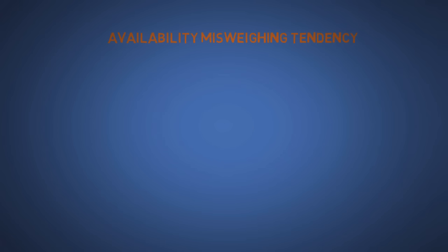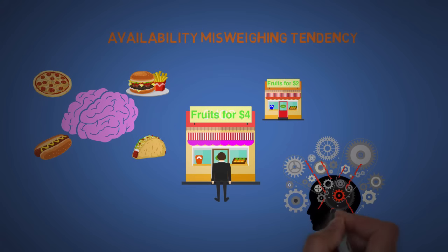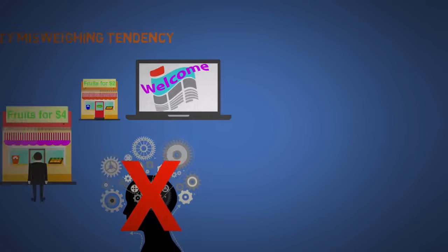The eighteenth is availability misweighing tendency. The mind works with what is easily available to it, like fast food. We might buy things that's available right in front of us even if there's something much cheaper somewhere else. This is why we have instincts, so the mind doesn't have to work as hard figuring stuff out. So if you got a confusing website or advertisement, then good luck!